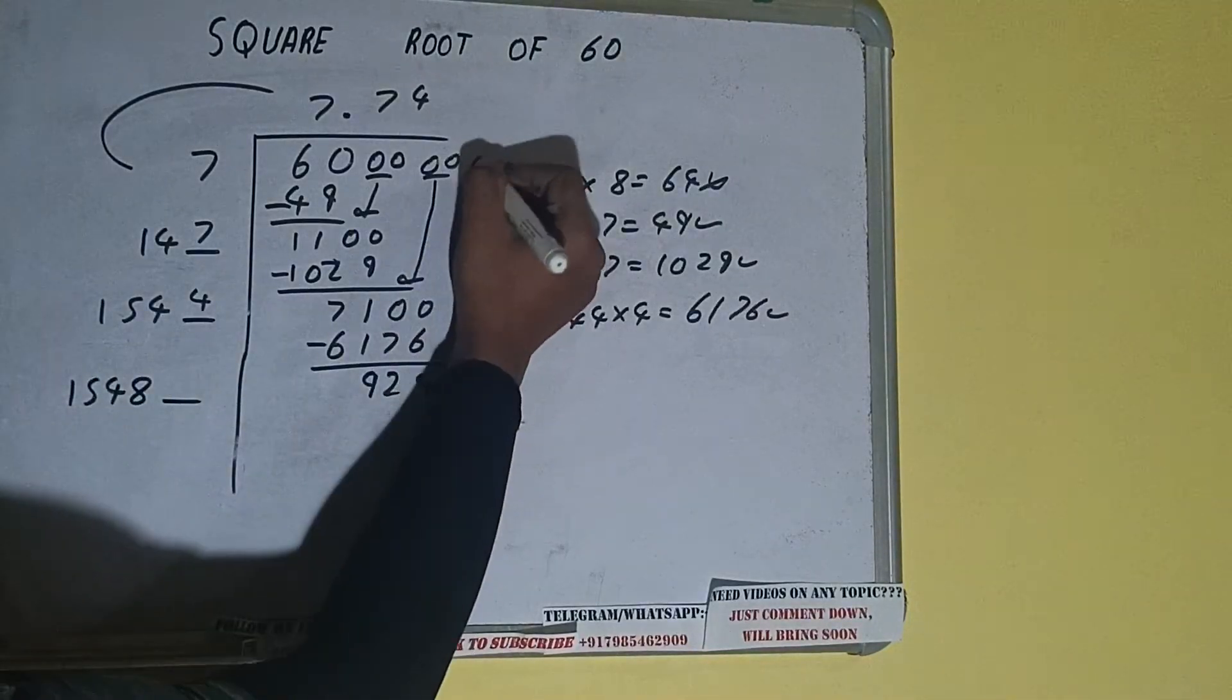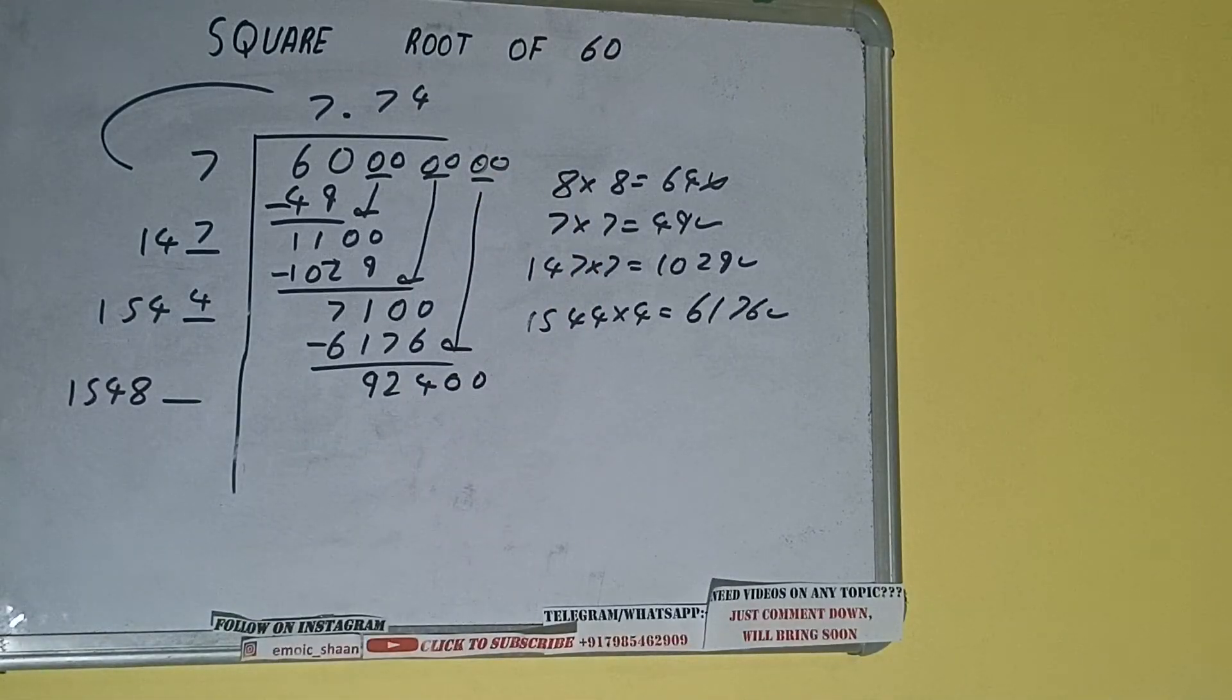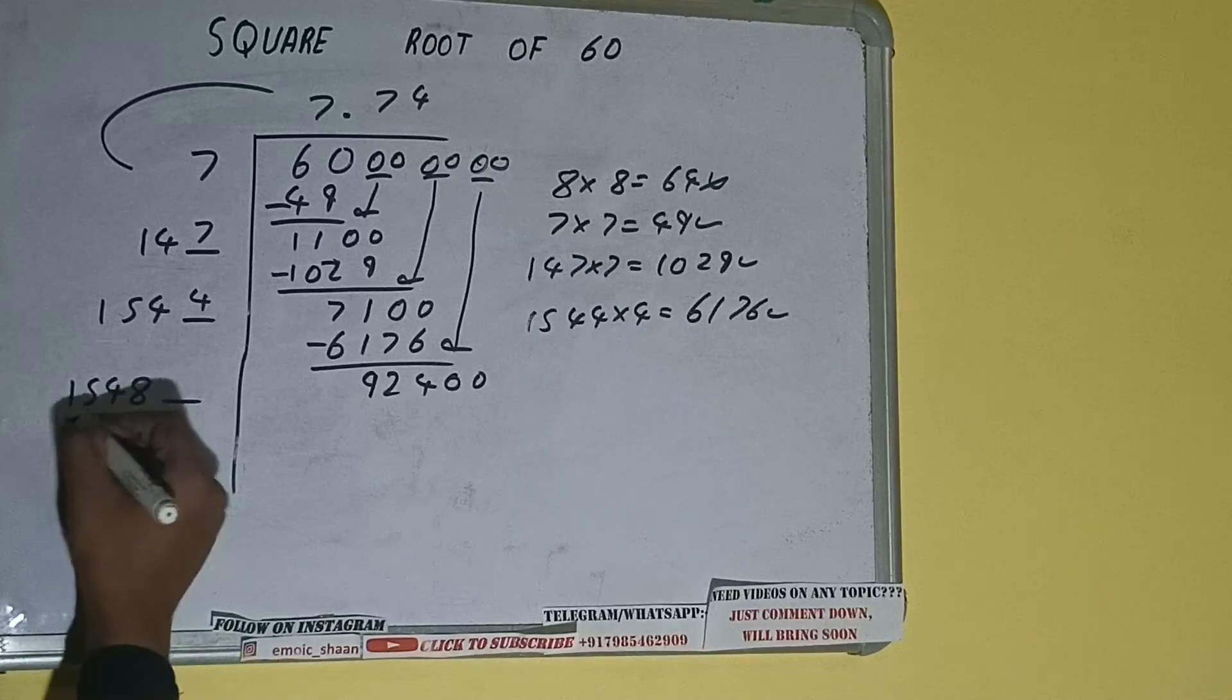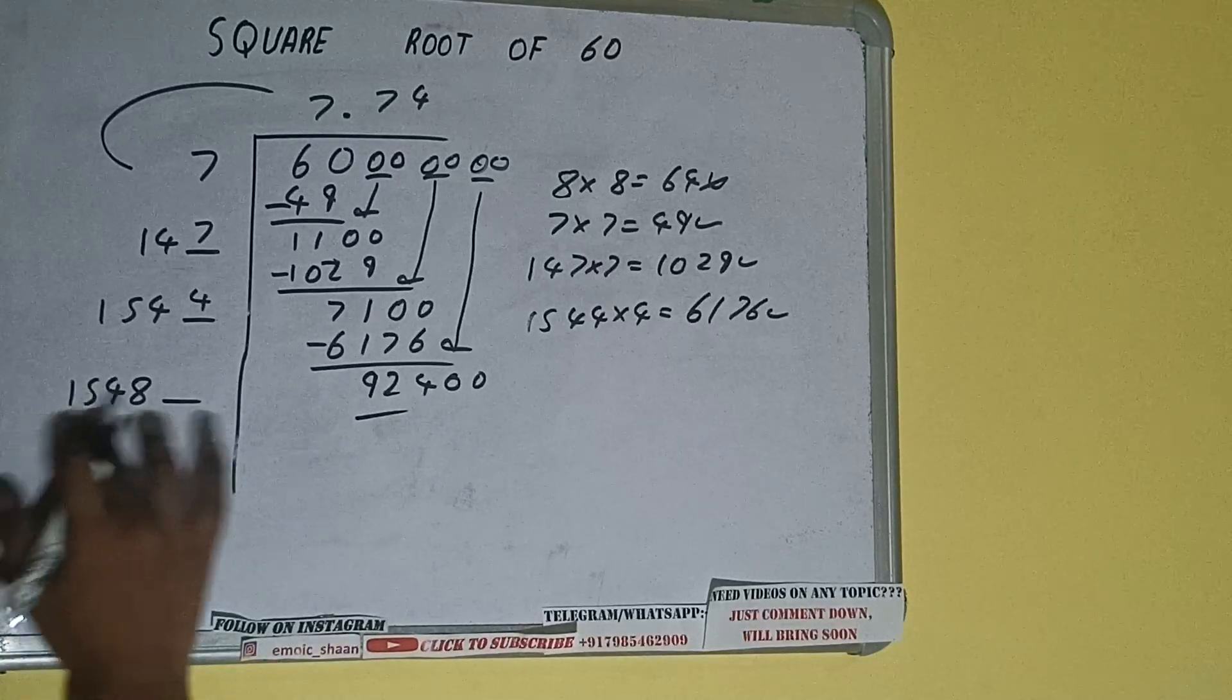And this number we need to make it big, so bring the next pair of zeros down, and it will be 92,400. Compare this 15 with this 92, so 15 times 6 is 90. So we can try 6 times.